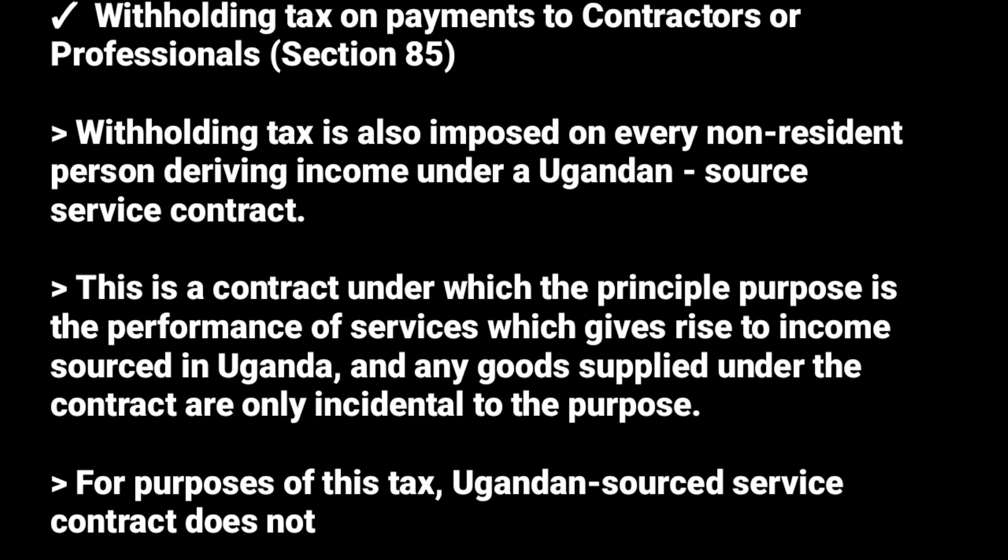Withholding tax is also imposed on every non-resident person deriving income under a Ugandan source service contract. If a non-resident person has a contract in Uganda to carry on either professional activities or management activities — a contract under which the principal purpose is the performance of services giving rise to income sourced in Uganda, and any goods supplied are only incidental — that person is liable to pay withholding tax of 15%. It must be withheld by the payer, who then remits it to the tax authority.